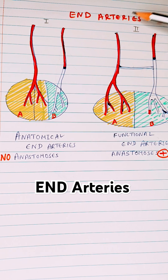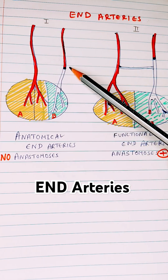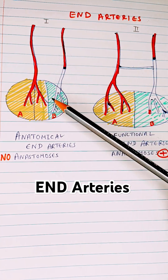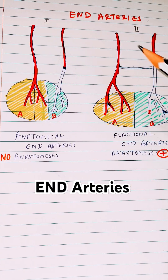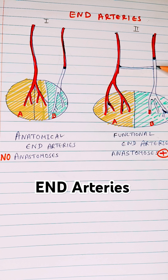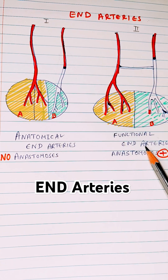To recap, end arteries are of two types: anatomical and functional. In anatomical end arteries, there is no anastomosis between the two blood vessels and no overlap in the tissues supplied by each vessel. In functional end arteries, there is some collateral, but whenever there is a blockage, this collateral will not fully compensate for the blood supply — it provides some amount, but not fully up to the normal level.